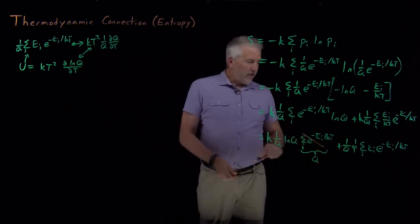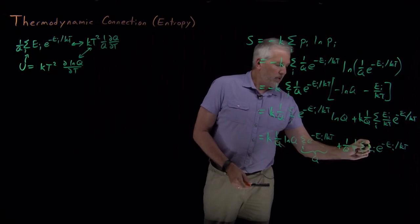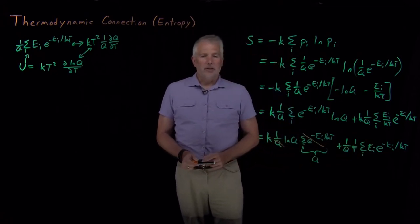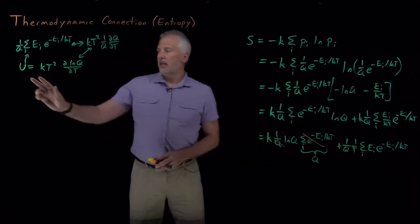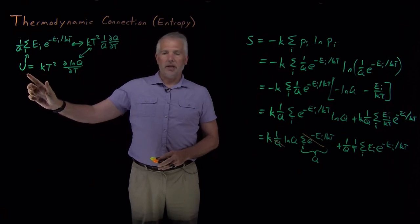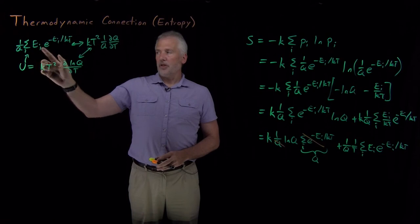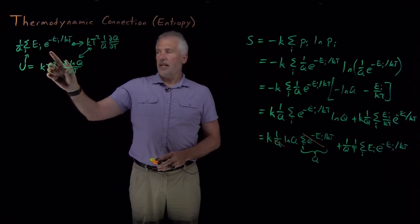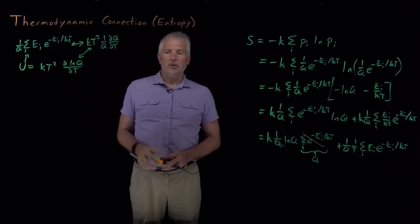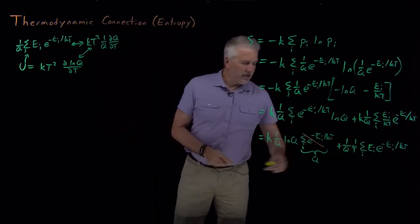The second term, I don't have a sum of Boltzmann factors. I have a sum of energies times Boltzmann factors. But from the work we did in calculating the thermodynamic connection formula for the energy, we found that the sum of energies times Boltzmann factors, that is kT squared times dq dt. So I can rewrite it the same way here.